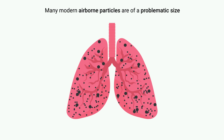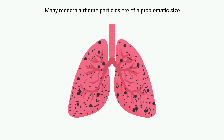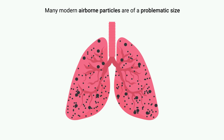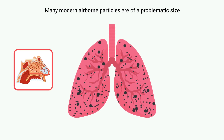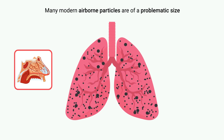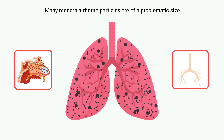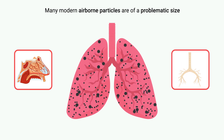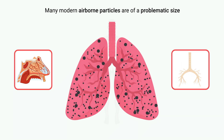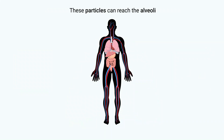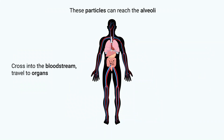Second, many modern airborne particles are of a problematic size — small enough to bypass the nasal vestibule and nasal conchae, but large enough to avoid being trapped in the bronchi and bronchioles. These particles reach the alveoli, cross into the bloodstream, and travel to various organs, potentially causing severe health issues.